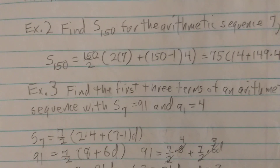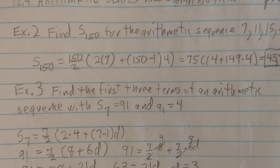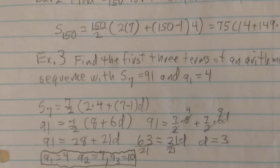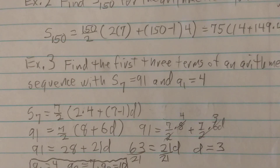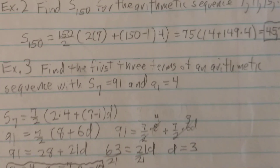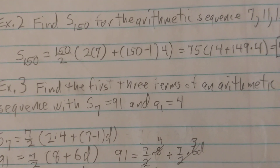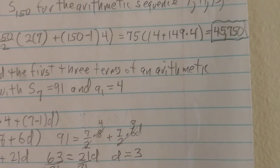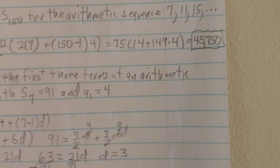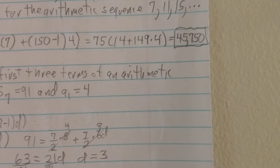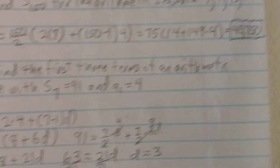In example 2, we find S sub 150 — the first 150 sequence terms — for the arithmetic sequence 7, 11, 15. Using our equation, S sub 150 is 150 over 2 times 2 times the first term 7, plus 150 minus 1 times 4, or 75 times 14 plus 149 times 4 in parentheses. You should get 45,750. Make sure you can get that on the calculator as you follow with me.